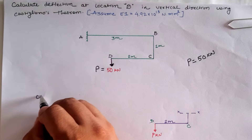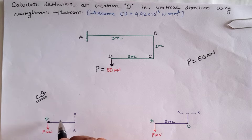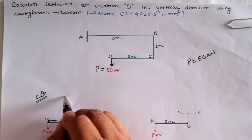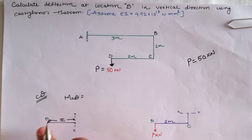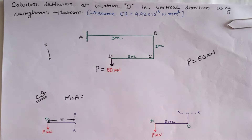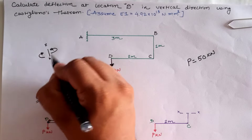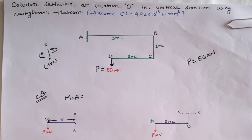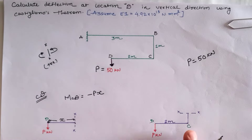For the CD span, taking D as the origin and sectional distance as x meters, the moment is P into x in the anticlockwise direction. According to the moment sign convention, left-hand side clockwise and right-hand side anticlockwise is positive. Here the moment is anticlockwise, so it is minus Px.